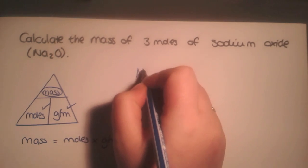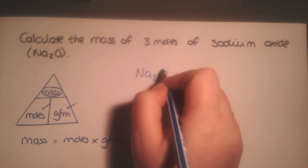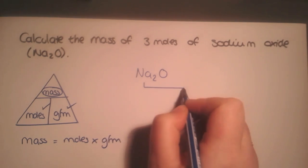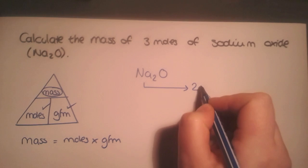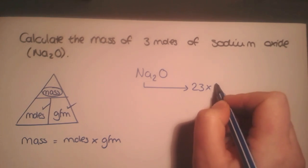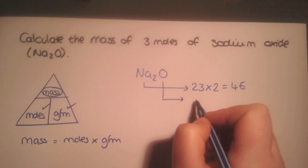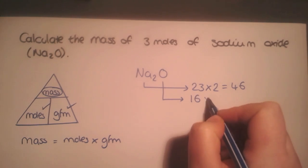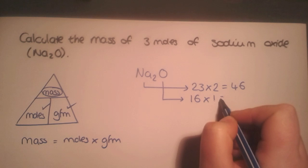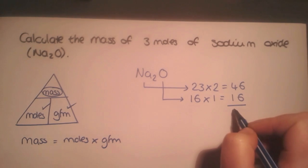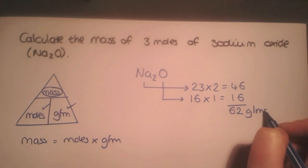To work out the gram formula mass we write down the formula. We find that sodium has a relative atomic mass of 23, and as there are 2 of them we multiply it by 2. Oxygen has a relative atomic mass of 16 and we only have 1. Added together this gives us 62 grams per mole.